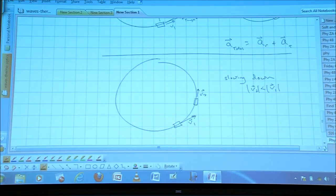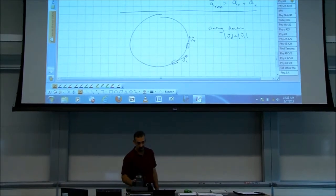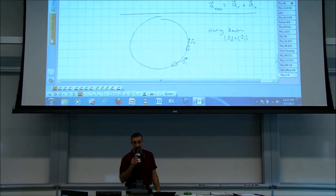So see if you can draw in the forces or the acceleration. Let's just draw an arrow for the radial acceleration, and an arrow for the tangential acceleration, and then an arrow for the total acceleration.